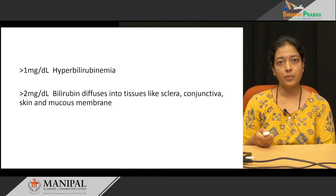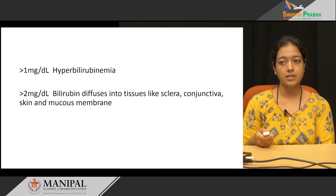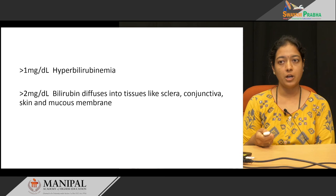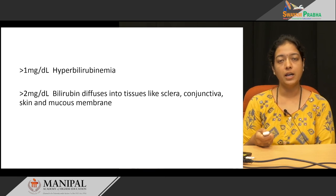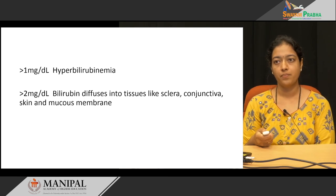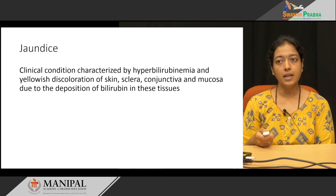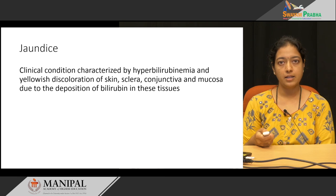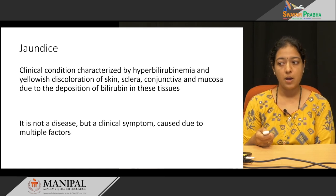When the total concentration of bilirubin increases more than 2 mg/dL, bilirubin diffuses into tissues such as sclera, conjunctiva, skin and mucous membrane, giving a yellowish colour to these tissues. Jaundice is a clinical condition characterized by hyperbilirubinemia and yellowish discoloration of skin, sclera, conjunctiva and mucous membrane due to the deposition of bilirubin in these tissues. It is not a disease but a clinical symptom which can be caused by multiple factors.